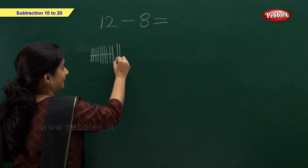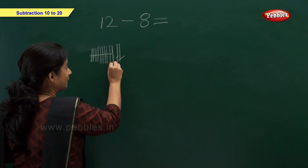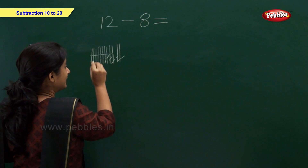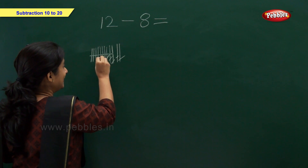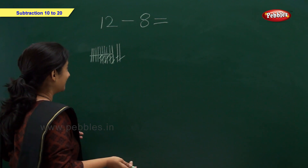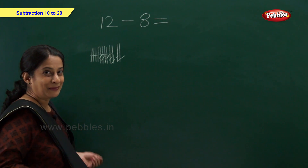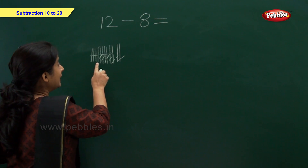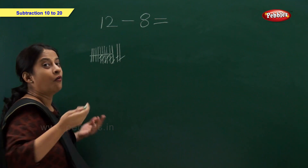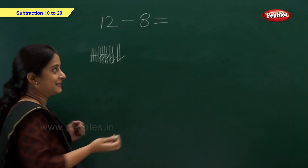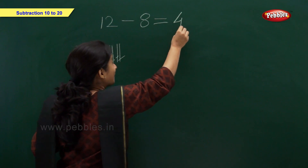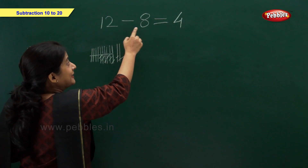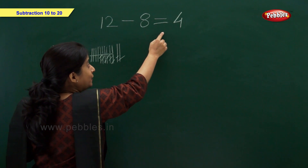1, 2, 3, 4, 5, 6, 7, 8. Now how many remaining? Let's count: 1, 2, 3, 4 — that's 4 ones. So 12 minus 8 is equal to 4.